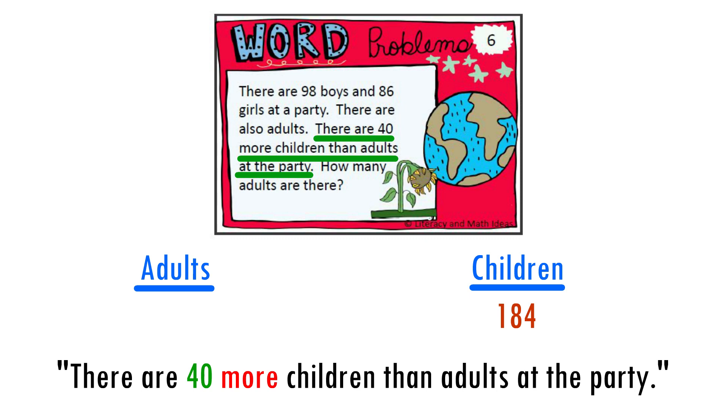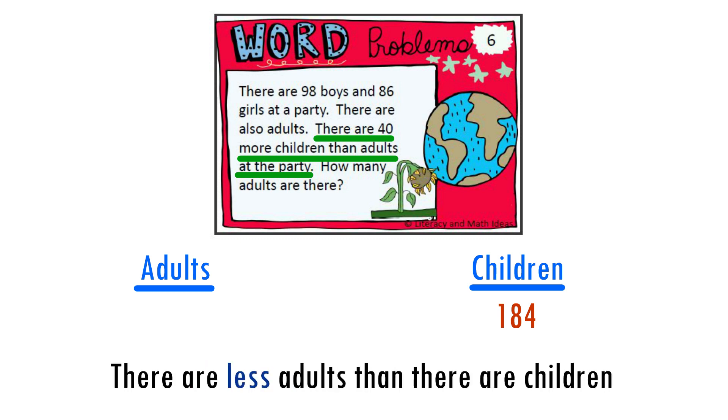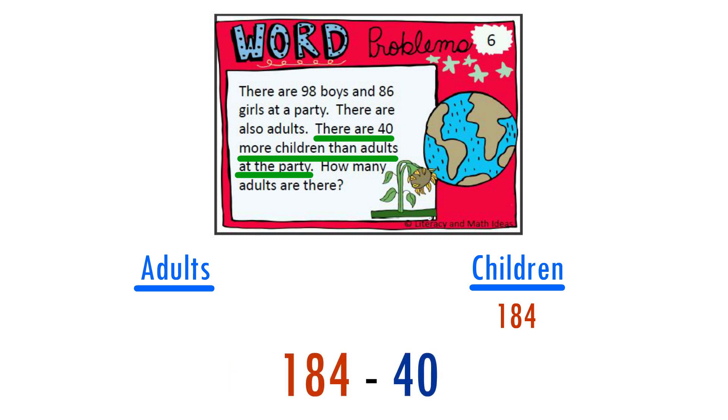If there are 40 more children than adults at the party, that means there are fewer adults than children. We are going to have to subtract 40 from 184 to find out the number of adults present. So, we will make this equation: 184 minus 40.